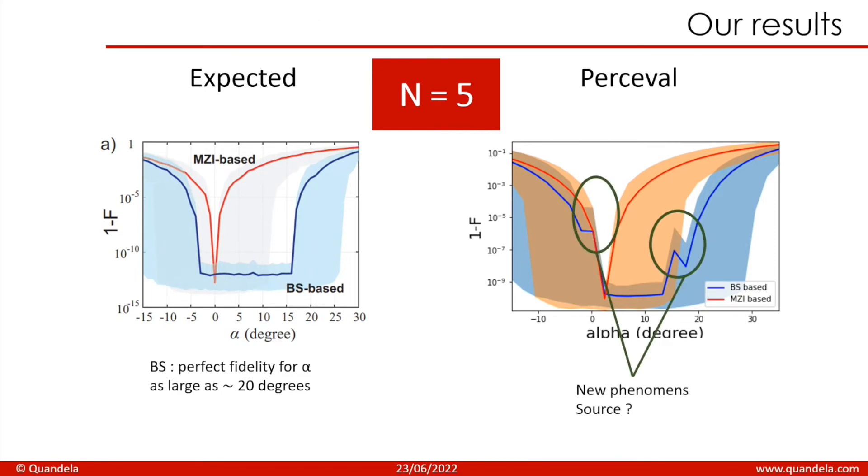On our graph, we can see that we have new phenomena that we don't see on the graphic of the article, but we don't really know where they are from. We don't know the sources, but we still can see that the BS based circuit is stable. So this is not a real problem.